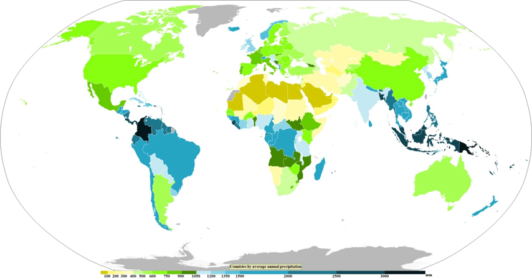The main ways water vapor is added to the air are: wind convergence into areas of upward motion, precipitation or virga falling from above, daytime heating evaporating water from the surface of oceans, water bodies or wet land, transpiration from plants, cool or dry air moving over warmer water, and lifting air over mountains.